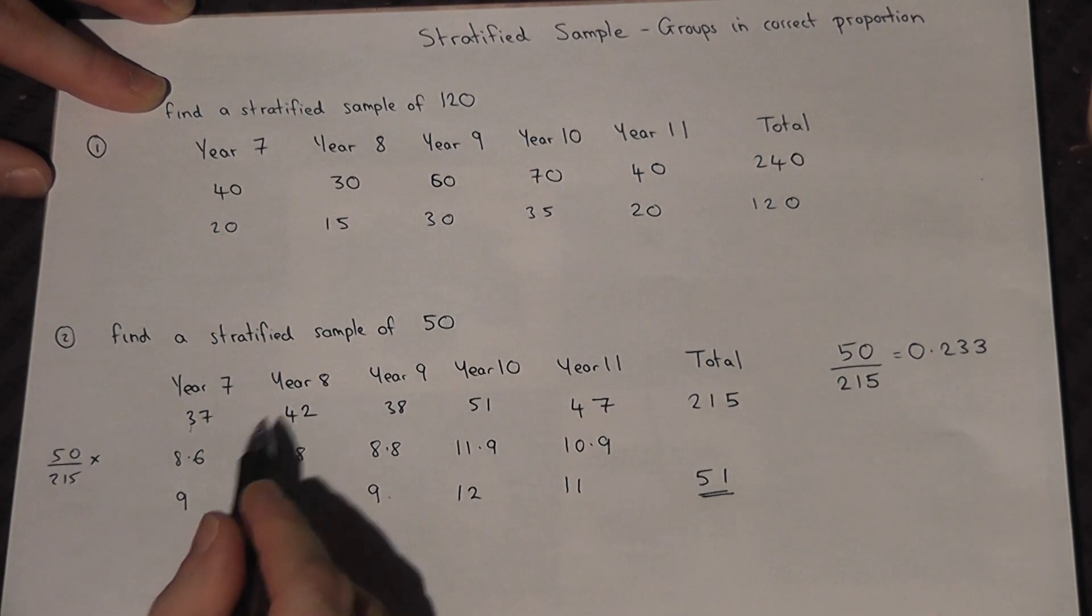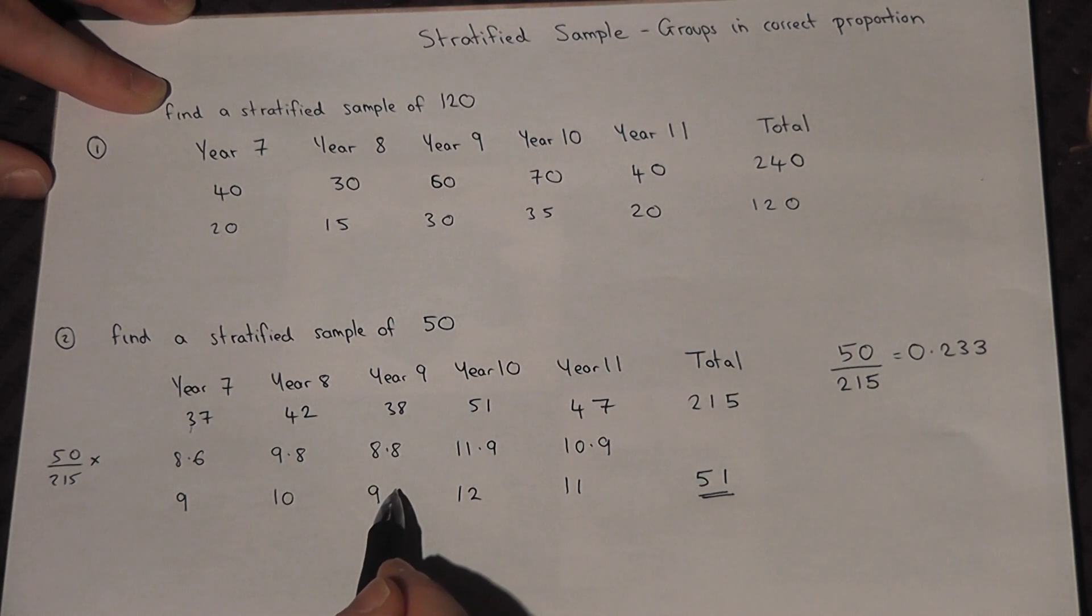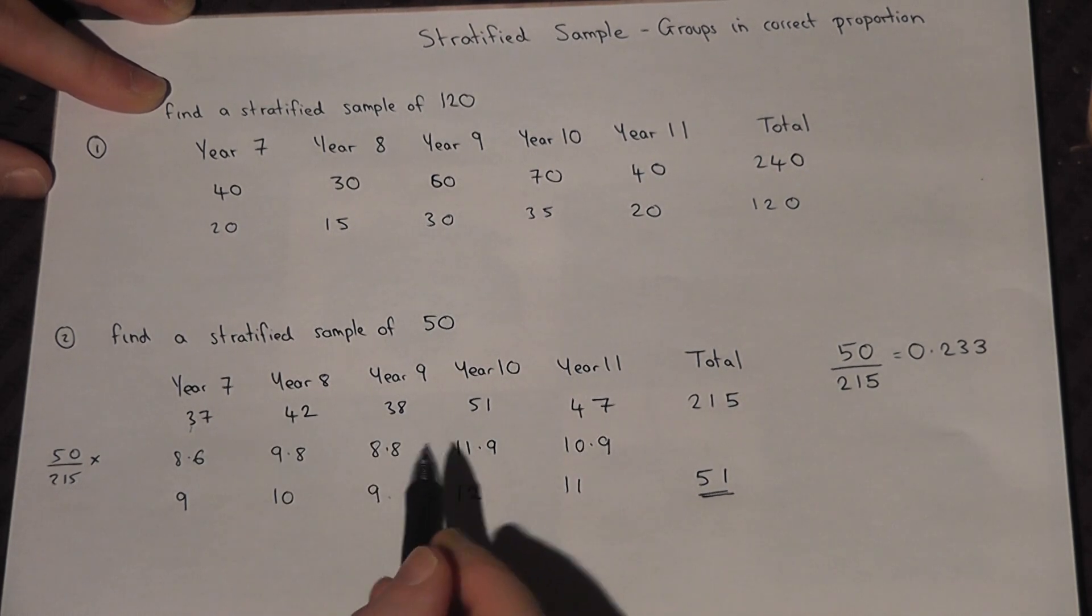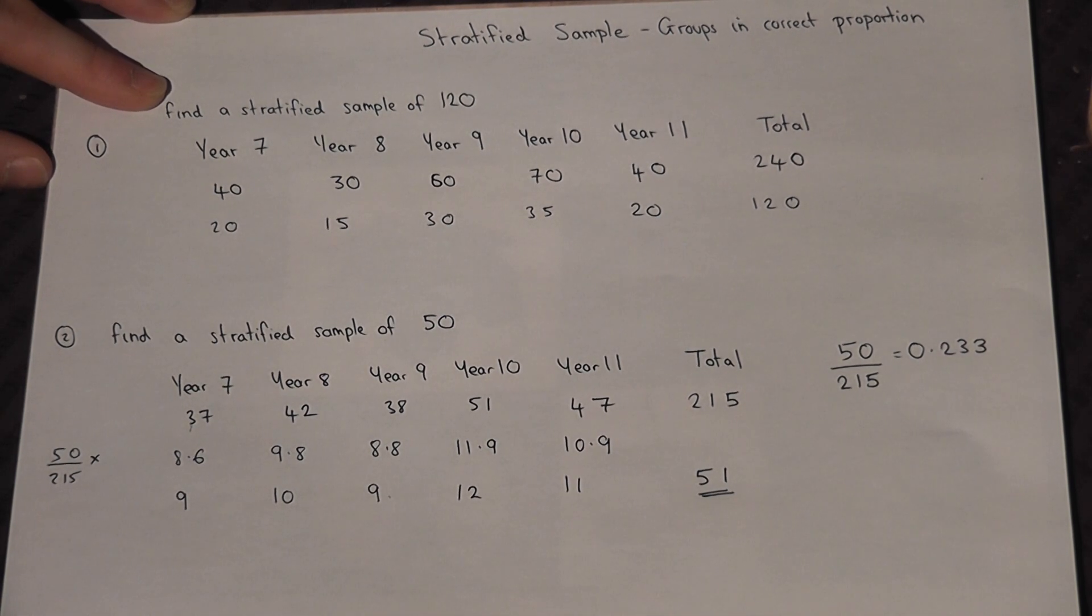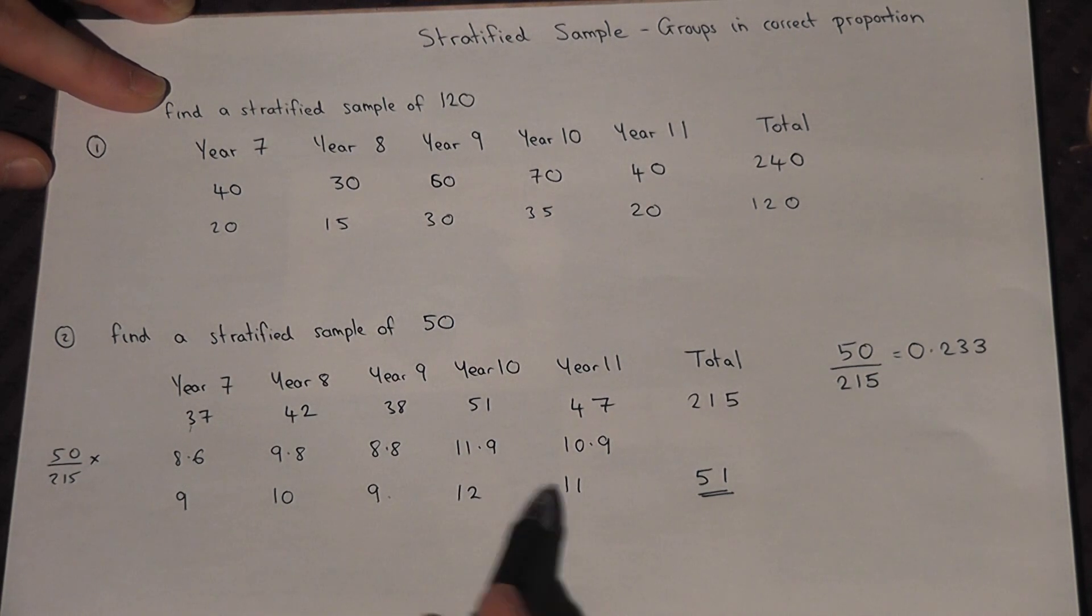Sometimes when you round the numbers due to error in the rounding, you end up with a sample which is either too big or too small. Now what you do is you choose one of the groups to correct to make the total 50.